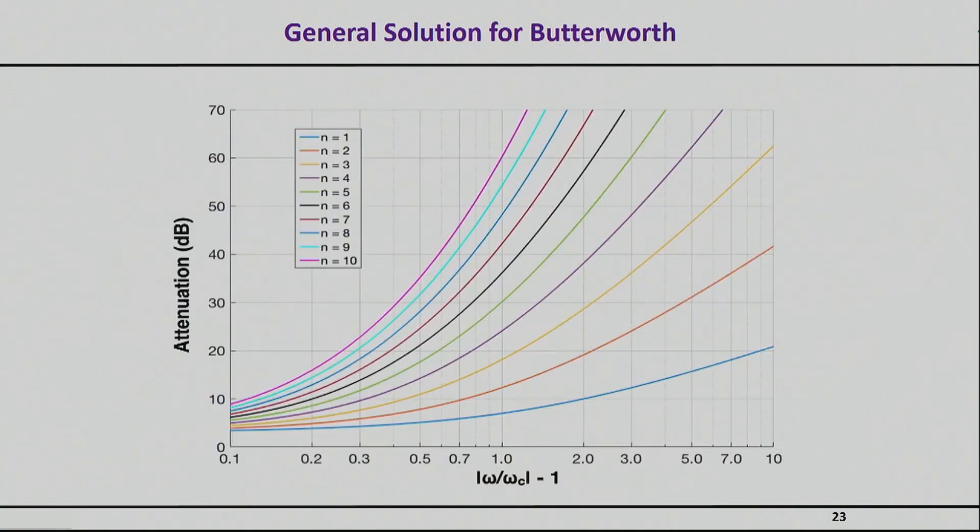Here is the attenuation for different orders of Butterworth, and it's plotted as (ω - ωc - 1) divided by (ωc - 1). The way you use this type of graph is you choose your cutoff frequency and then you choose the frequency that is slightly above or higher depending on what you want.